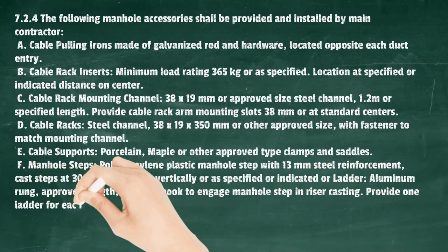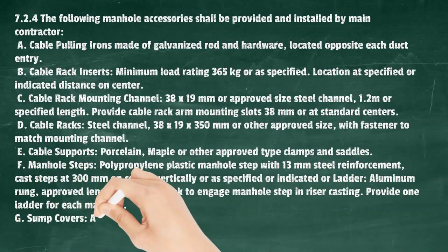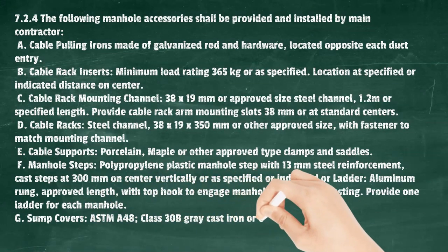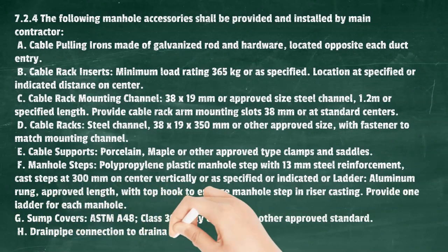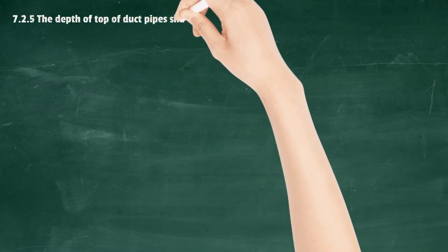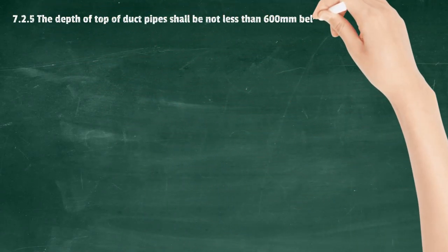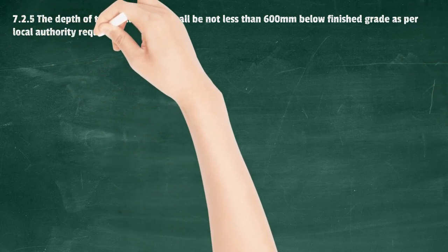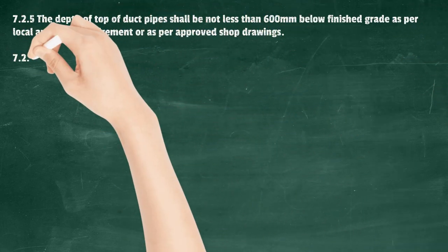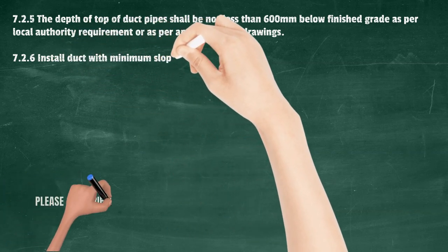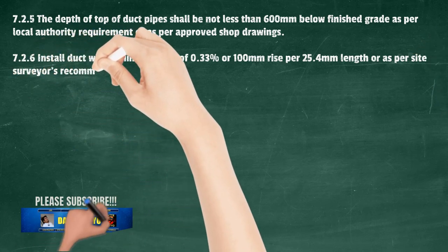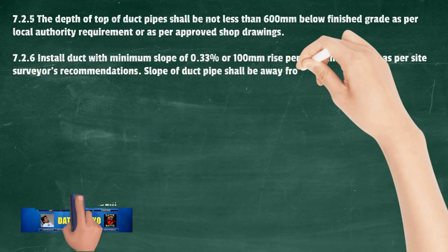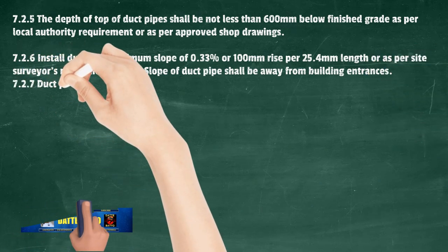Provide one ladder for each manhole. G) Sump covers: ASTM A48, class 30B gray cast iron or other approved standard. H) Drain pipe connection to drainage line. The depth of top of duct pipes shall be not less than 600 mm below finished grade as per local authority requirement or as per approved shop drawings. Install duct with minimum slope of 0.33% or 100 mm rise per 25.4 m length or as per site surveyor's recommendations. Slope of duct pipe shall be away from building entrances.